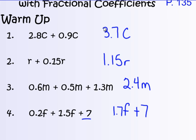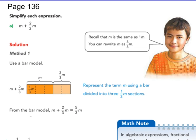We're going to go on to page 136. You can see in your textbook that they're going to do this using bar models. We don't have to do bar models, but this might be a good picture way for you to see that m plus two-thirds m does equal five-thirds m. Remember, this gentleman's telling us here that m is the same thing as one m.